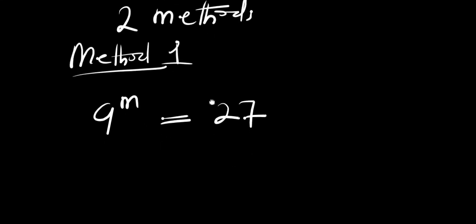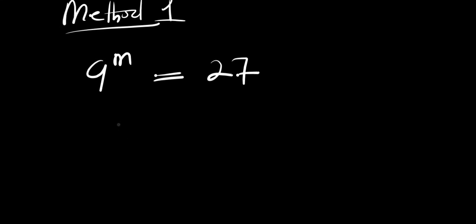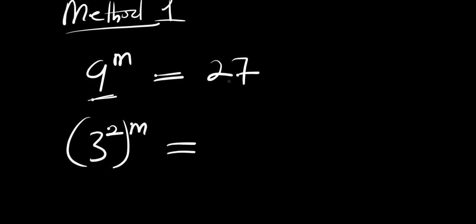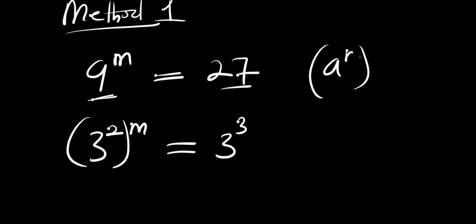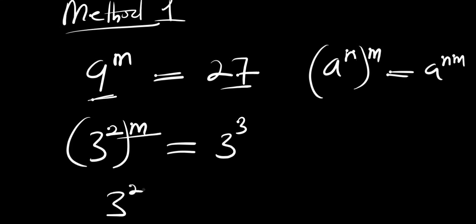In this first method we will try to ensure that both parts of this equation have the same base. That means we will express 9 power m as 3 power 2, all raised to the power m, and this equals 27, which is 3 raised to the power of 3. Now if you have (a power n) power m, this equals a power n times m, so we multiply the exponents and get 3 to the power 2m equals 3 to the power 3.